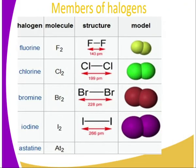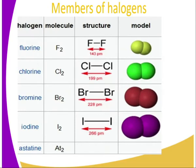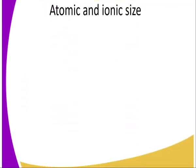It's good to mention that halogens are diatomic molecules — they exist as molecules. The members are fluorine, chlorine, bromine, iodine, and astatine. As you can see from the atomic illustration, they are diatomic molecules.